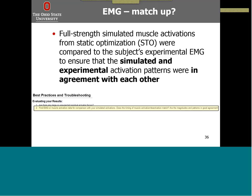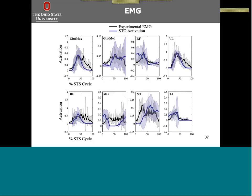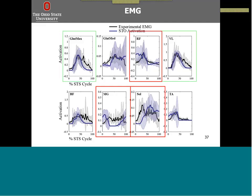Just to familiarize yourself with these plots: in black we have the experimental EMG activation, and in blue we have the static optimization activation, each with a shaded error bar for one standard deviation. The experimental EMG activation values were normalized to the peak of the static optimization activation. Looking at the gluteus maximus and vastus lateralis, the magnitudes of the peaks as well as their timing match quite well. But for muscles such as the rectus femoris, medial gastrocnemius, and soleus, the timing as well as some of the magnitudes are off.